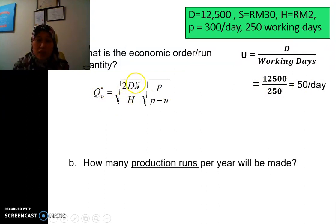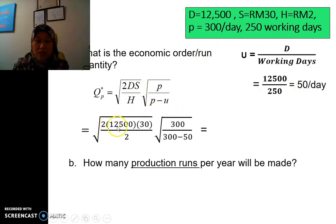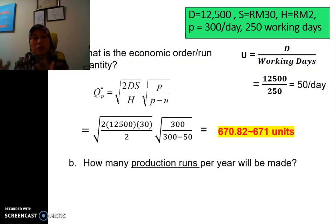We have D as H, we have P here, 300, and then U, 250, and then we calculate, and we get 670.82. So remember, for quantity, we need to round up, because it's the whole thing, you cannot use in the point form.